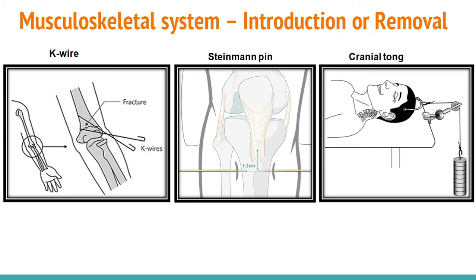Cranial tongs implantation is performed for treatment of cervical spine fractures, dislocations, or spinal cord injuries. The patient is prepped and anesthetized in the supine position. The physician inserts threaded pins on both sides of the head simultaneously, attaches a spring-loaded mechanism to the chin, then adds weights at 5 to 10 pound increments at 10 to 20 minute intervals, obtaining X-rays after each weight application.